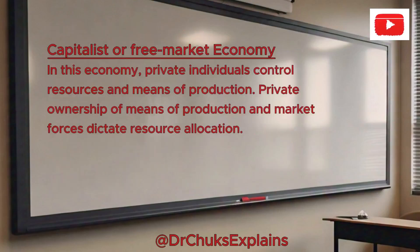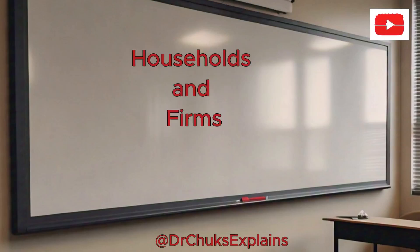Capitalist or free market economy. In this economy, private individuals control resources and means of production. Private ownership of means of production and market forces dictate resource allocation. In other words, whereas in the centrally planned economy the state controls most economic decisions, in the capitalist economy the key economic agencies are private individuals — sometimes called households and firms — and these interact in free markets, through a system of prices, to determine the allocation of resources.